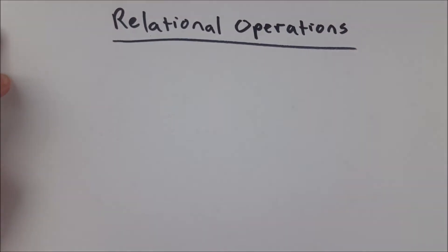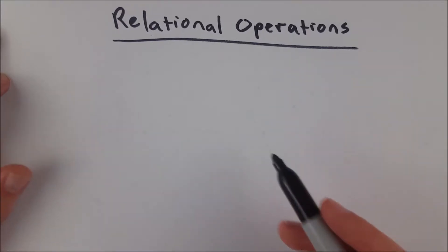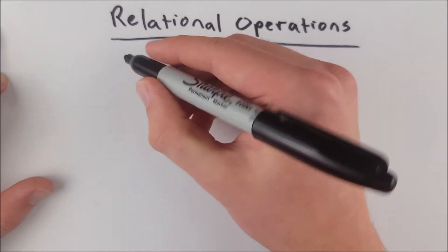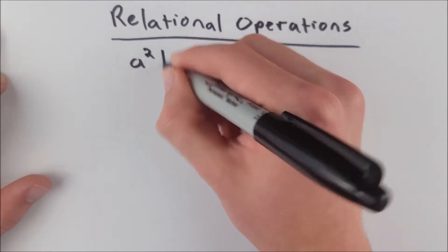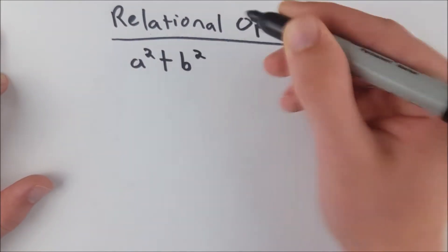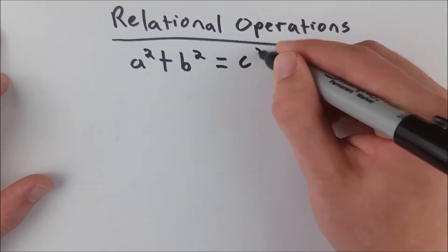In any event, relational operations. A relational operation, as you might expect, relates one quantity to another. So one of the most common ones that perhaps you've seen is equals. A squared plus B squared is equal to C squared.